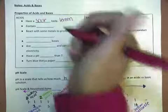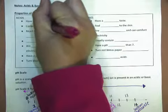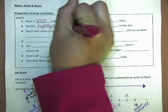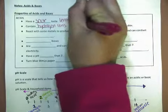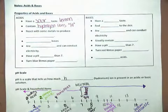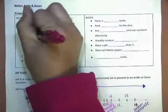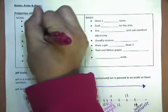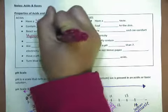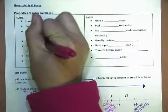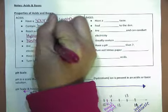They contain hydrogen ions. They usually start with the letter H in their chemical formula. They react with some metals to produce hydrogen gas. They neutralize bases.